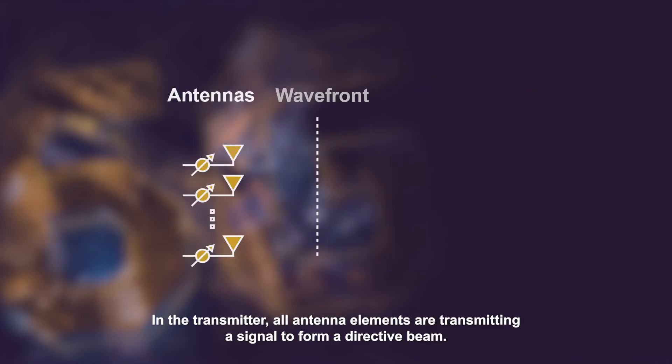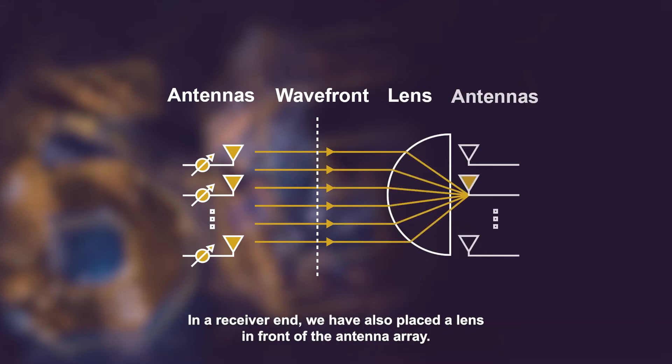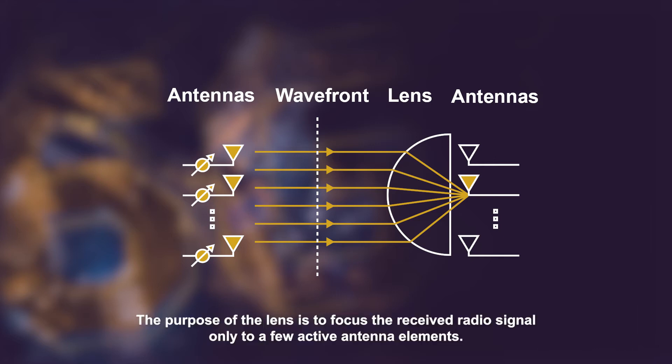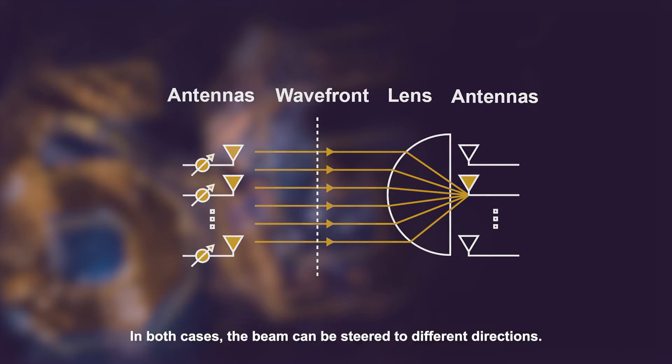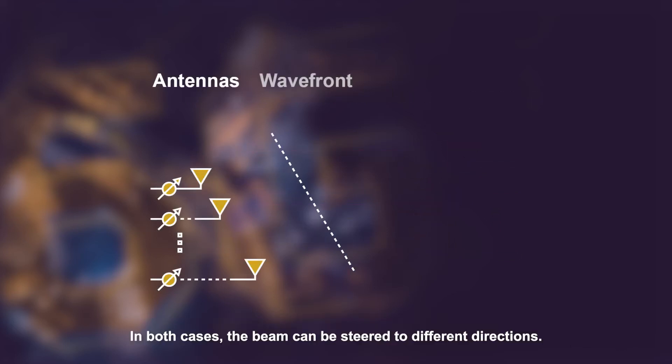In the transmitter all antenna elements are transmitting a signal to form a directive beam. In the receiver end we have also placed a lens in front of the antenna array. The purpose of the lens is to focus the received radio signal onto only the few active antenna elements. In both cases the beam can be steered to different directions.